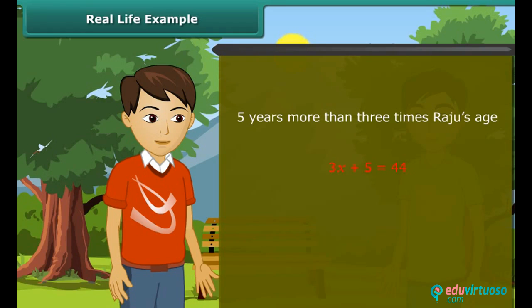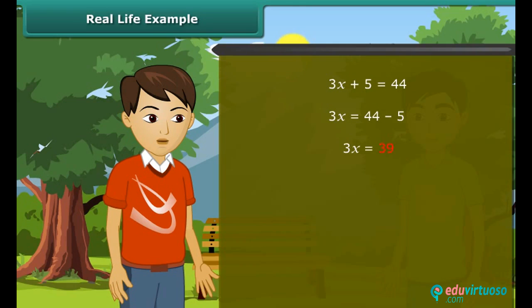Now we will solve this equation. Transposing 5 to right hand side, we get 3X which is equal to 39. Transposing 3 to right hand side, we get X as 13. Hence, Raju's age is 13 years.